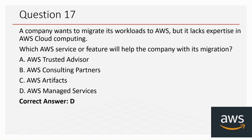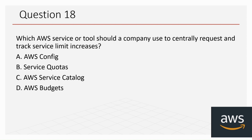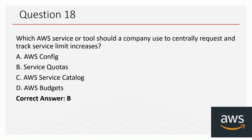Question 18: Which AWS service or tool should a company use to centrally request and track service limit increases? The options are: A) AWS Config, B) Service Quotas, C) AWS Service Catalog, and D) AWS Budgets. The correct answer is B, Service Quotas.